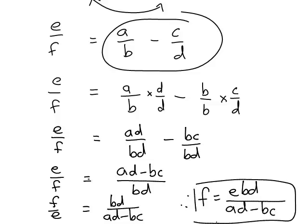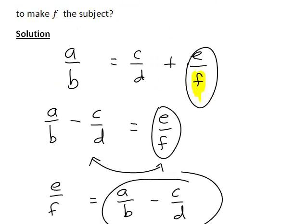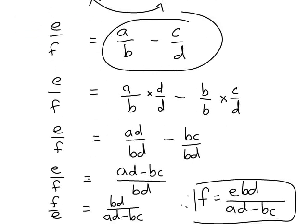So this is an example where we transposed a formula where the letter that we wanted, which was f, was in the denominator. The main thing to be noting with the process is that we started by getting the term involving f on its own on one side of the equation. We then obtained a common denominator for the term on the other side so that we had a single fraction on each side. And finally that then allowed us to take reciprocals of both sides and thus readily solve for f.